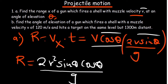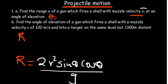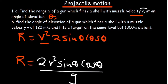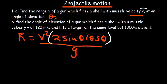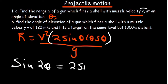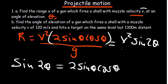We can simplify further using the double angle identity from trigonometry: 2 sine theta cosine theta = sine 2 theta. So the simplified range formula becomes R = V² sine 2theta divided by G. This is the formula to use when finding range without being given time.